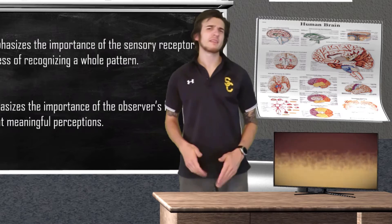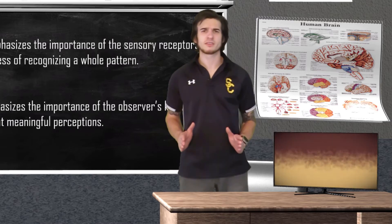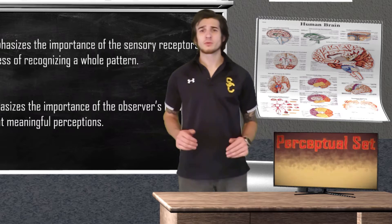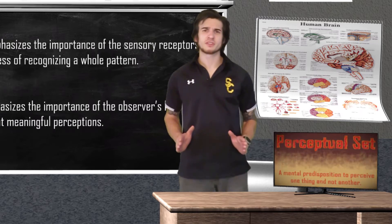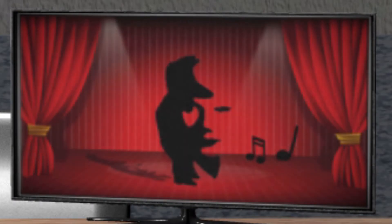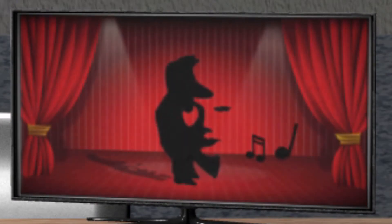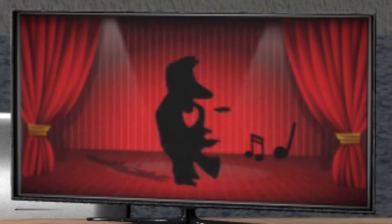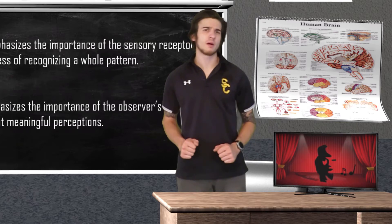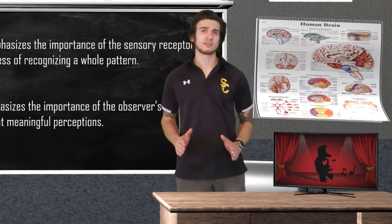Another important psychology term and the perfect example for top-down processing is going to be the perceptual set. A perceptual set is the mental predisposition to perceive one thing over another. Here's a picture — what do you see? Chances are you saw a dude jamming out on the sax. With the rather ambiguous stimulus provided, how exactly did you come to this conclusion? My guess would be the sound of the saxophone and the music notes coming from the instrument led to your cognition.